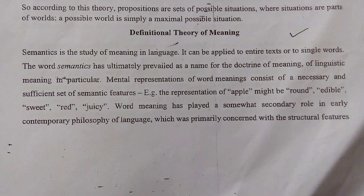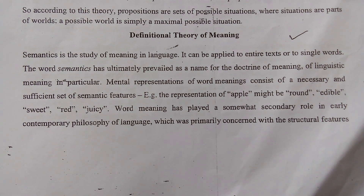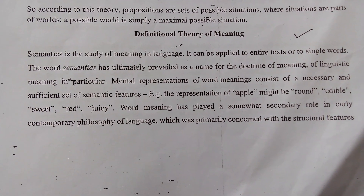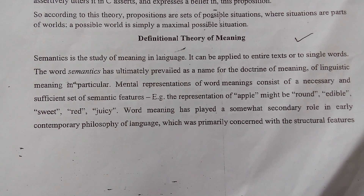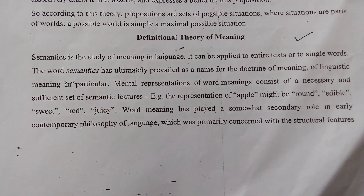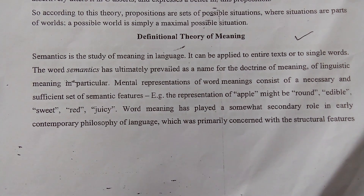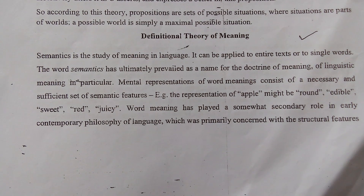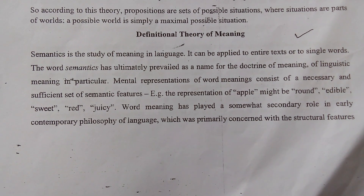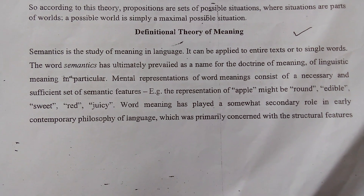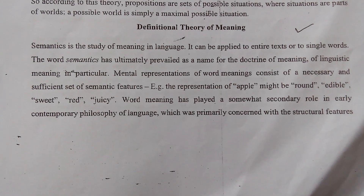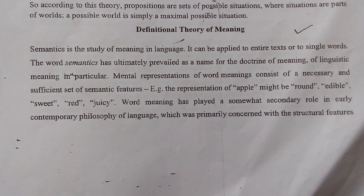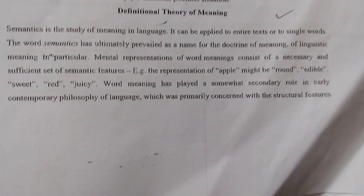Semantics is the study of meaning in language. It can be applied to entire texts or to single words. The word semantics has ultimately prevailed as a name for the doctrine of linguistic meaning — in particular, the mental representation of word meaning, consisting of a necessary and sufficient set of semantic features. For example, the representation of 'apple' might be: round, edible, sweet, red, juicy.